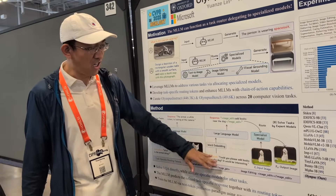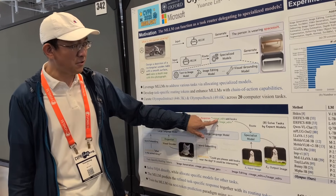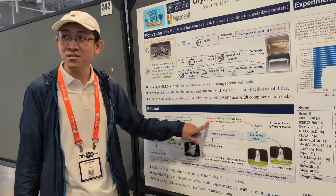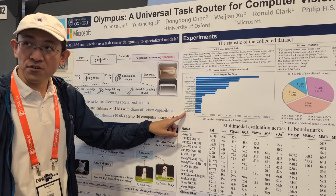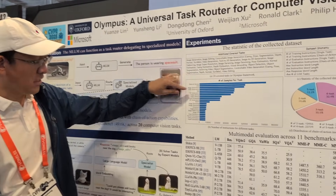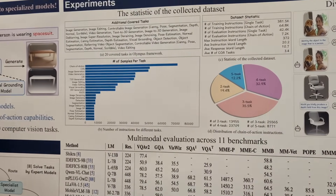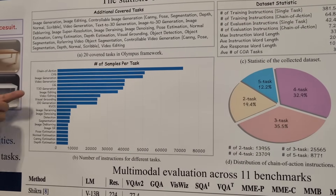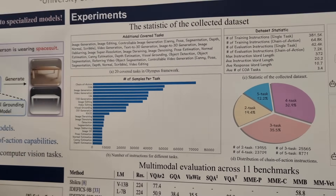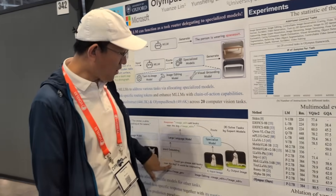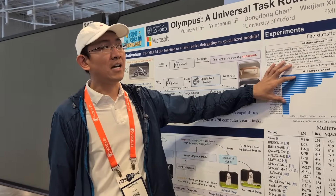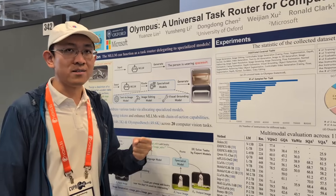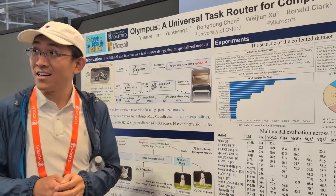In order to give the special tokens as well as extract the keywords, we collected a dataset named Olympus that contains 20 different tasks. For each task, we define a special token, and we asked GPT-4 to generate no less than 5,000 instruction and response pairs. With this dataset, we train the model together with some standard multimodal datasets, like LLaVA-Next.